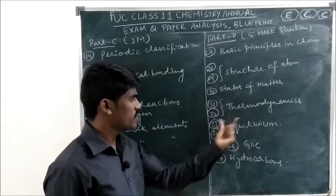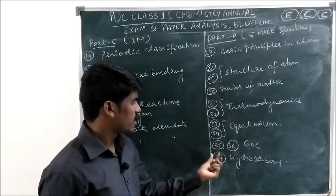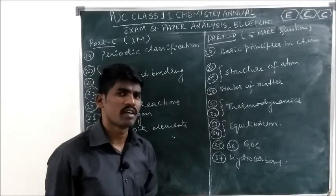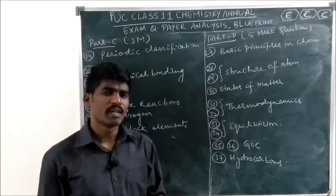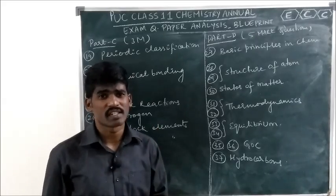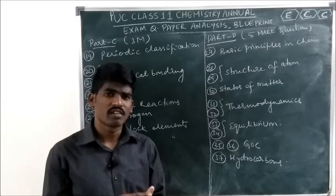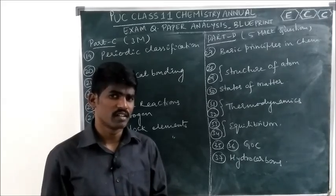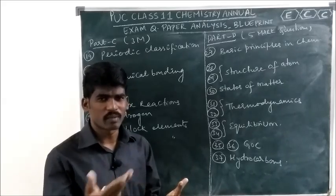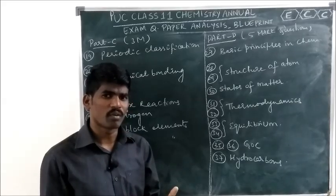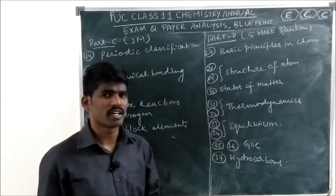Questions 35 and 36 are both from General Organic Chemistry — you might get questions from nomenclature and isomerism. Question 37 is from Hydrocarbons. You need to put more focus here, especially on chemical properties of benzene: electrophilic substitution reactions — chlorination, Friedel-Crafts alkylation, Friedel-Crafts acylation, nitration, sulphonation — and preparation methods of benzene. Also from aliphatic hydrocarbons: chlorination of methane (substitution reactions), Markovnikov's rule, anti-Markovnikov from alkenes, and ozonolysis reactions.